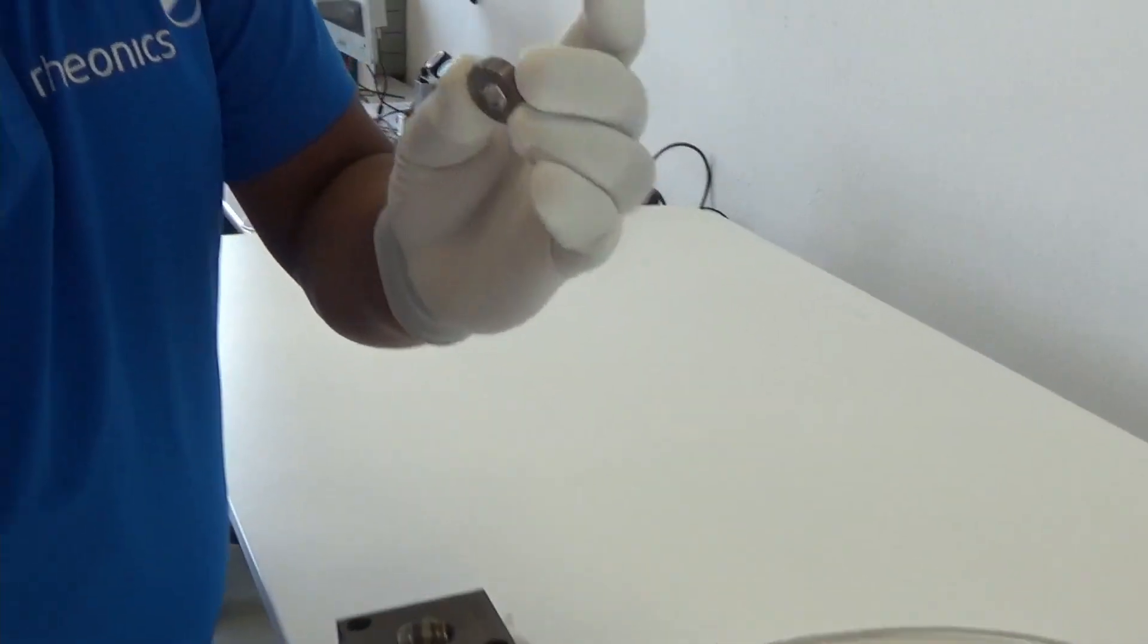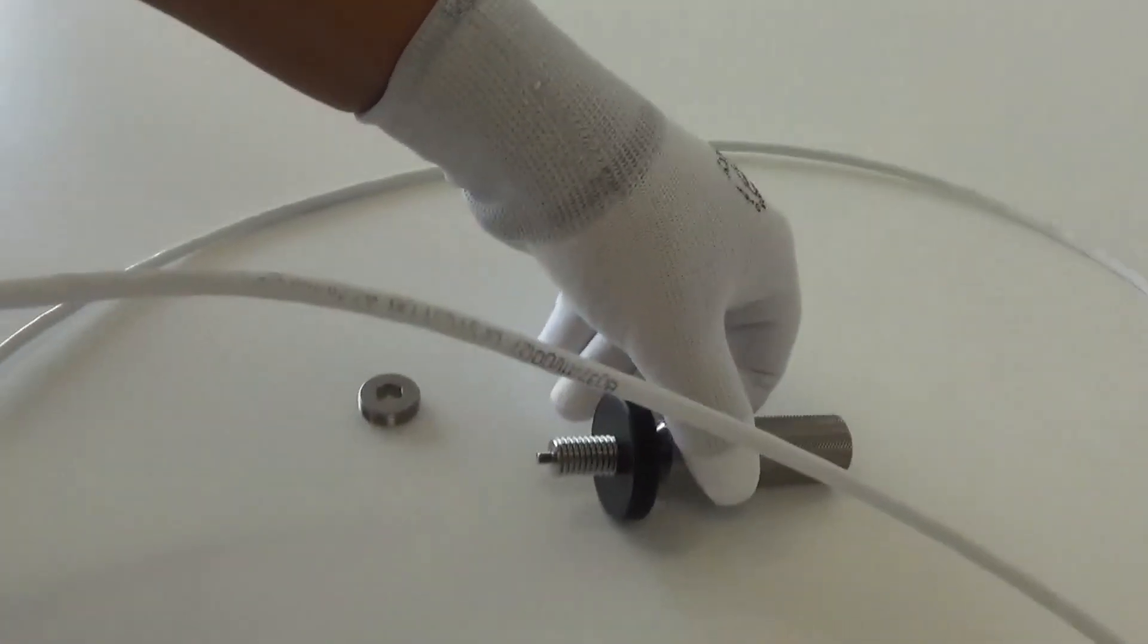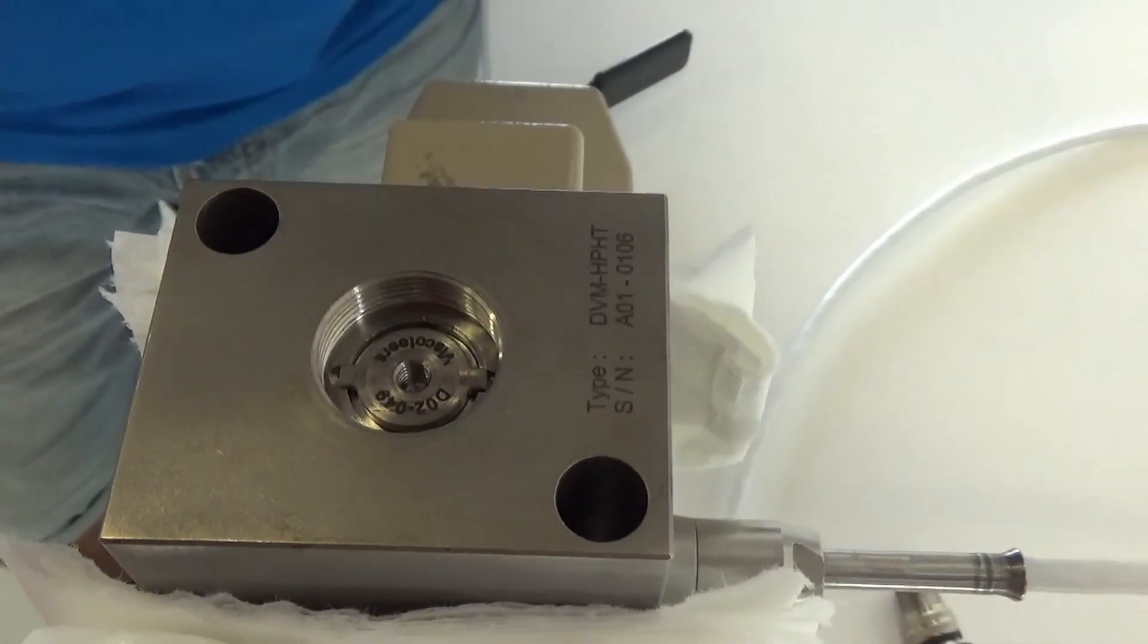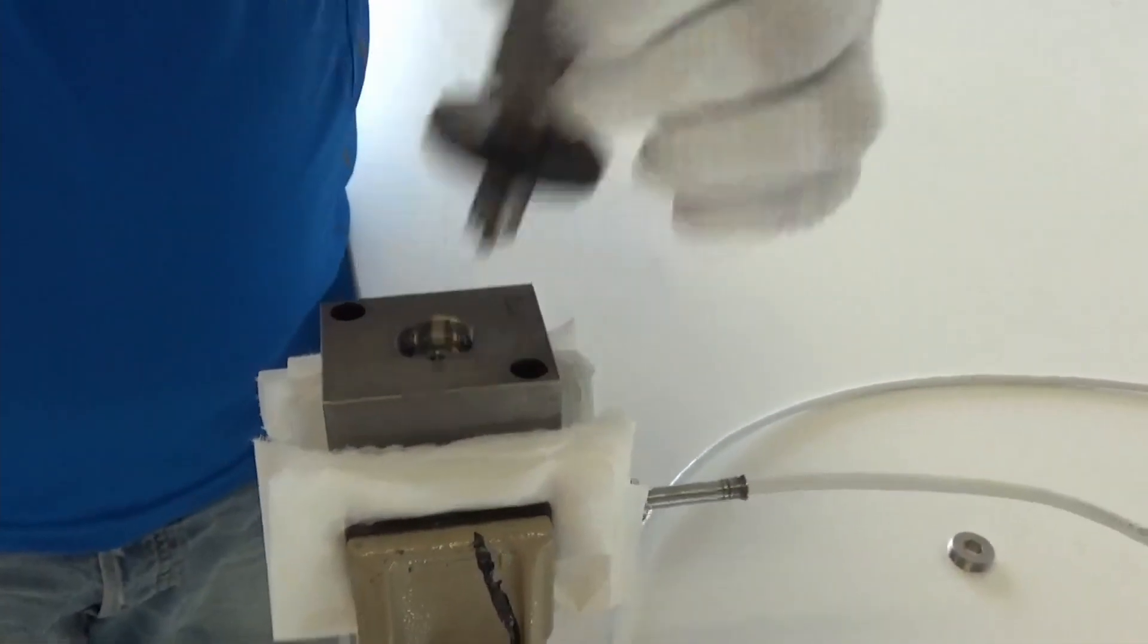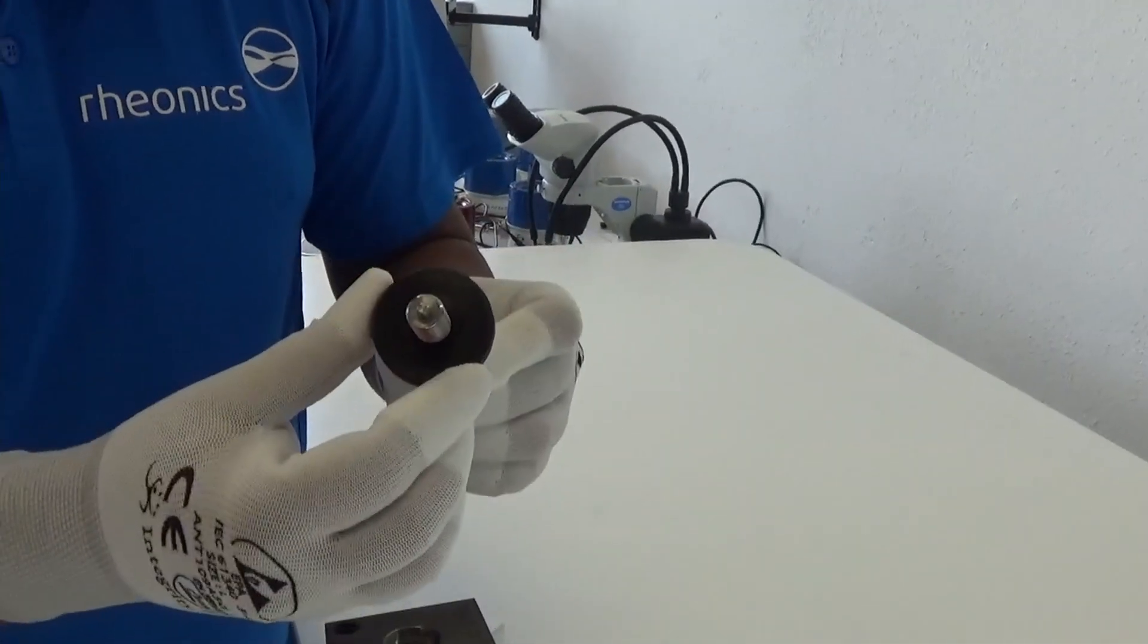Now you can see the nut here. Now take the tool for removing the sensing element. This is the sensing element you see. So you take this and you have the ring already in place. This is the ring that we will use to extract that.